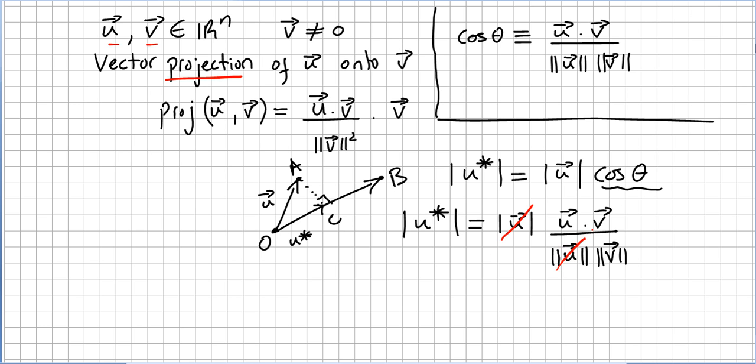If you have u* and you want to obtain u* but project it on v, what you do is you pick the norm of u* and you multiply it by the unit vector v. Please check the previous video for the unit vectors. So here we are going to multiply this by the unit vector.